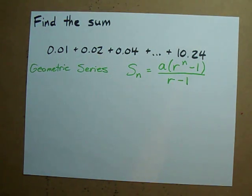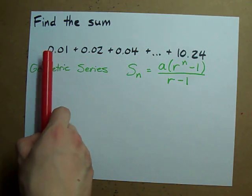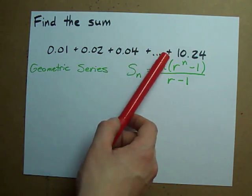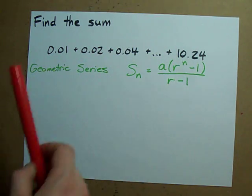How do you find the sum of a geometric series? How do you find the sum of .01 plus .02 plus .04? And on and on until you're adding up 10.24.